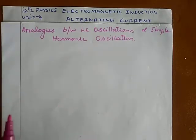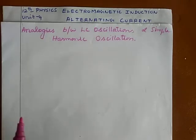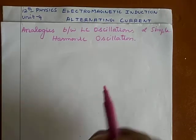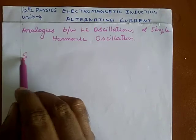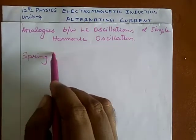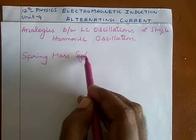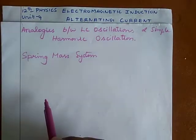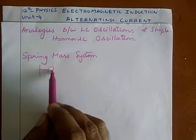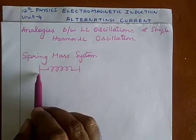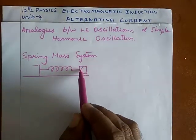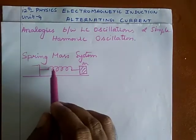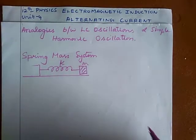In our 11th standard, we studied many mechanical systems. Let me compare this LC oscillation system with a mechanical system. I will consider a spring-mass system — a spring that is rigidly supported by a stand, connected with a mass M, having force constant K or spring constant K.